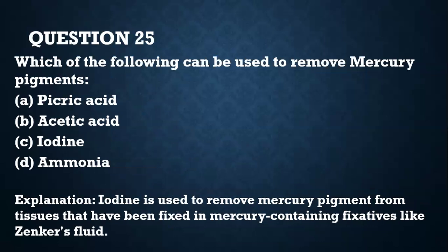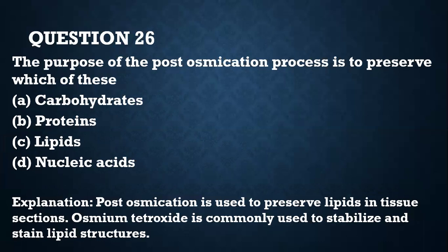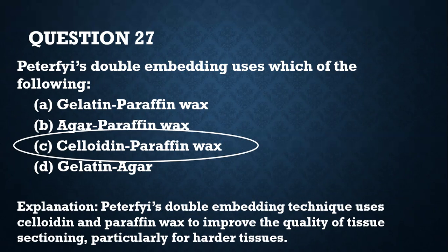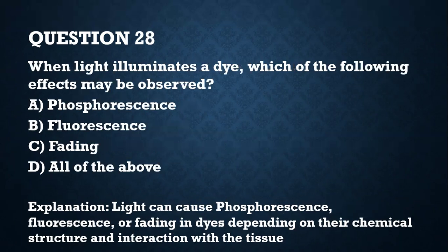Question 25. Which of the following can be used to remove mercury pigment? The answer is iodine. Iodine is used in removing mercury pigment from tissues fixed in mercury-containing fixatives, such as Zenker's fluid. Question 26. The purpose of post-osmification is to preserve lipids, using osmium tetraoxide to stabilize and stain lipid structures. Question 27. Peterfi's double embedding uses collodion and paraffin wax to improve the quality of tissue sectioning, particularly for harder tissues.